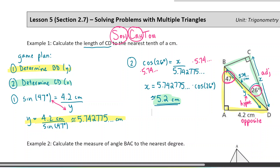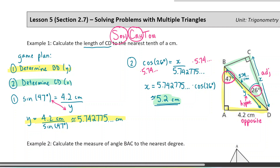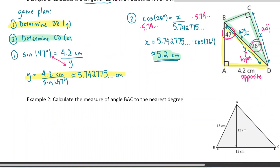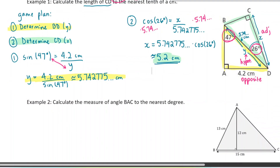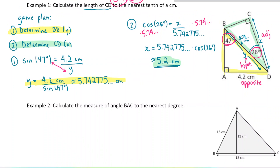So again, the steps are: first determine a game plan — usually it's two or three steps. Label anything you need to label, then start with step one and move forward. An important thing to realize, especially for the next question, is you're only allowed to work with right-angled triangles in this lesson. We've only learned how to use right-angled triangles, so you can't use a larger triangle that doesn't have a right angle.